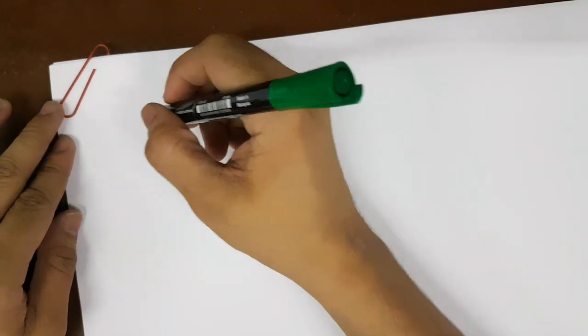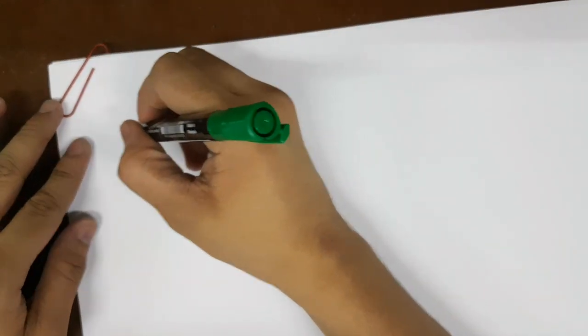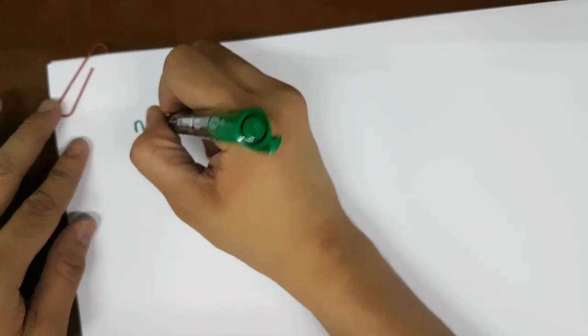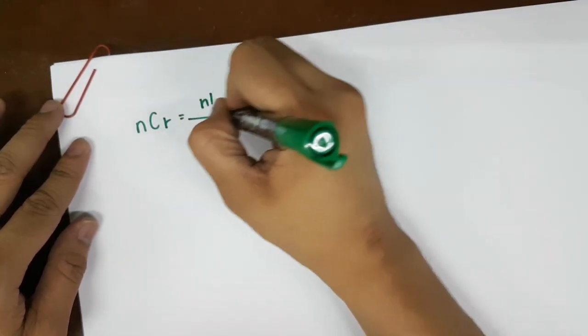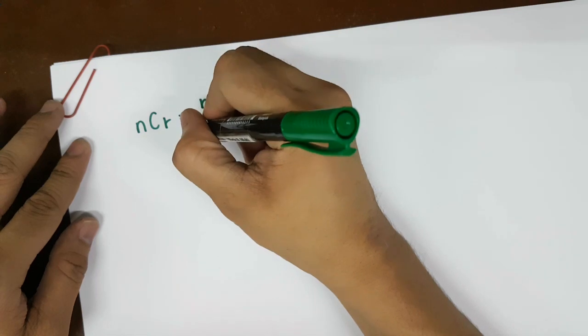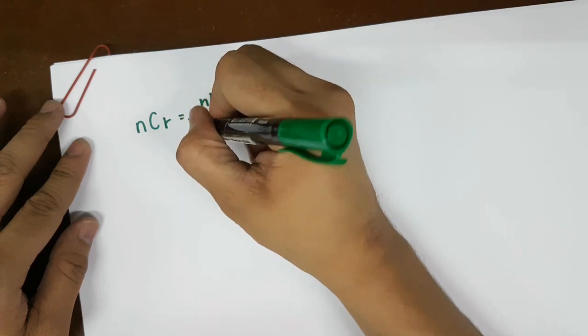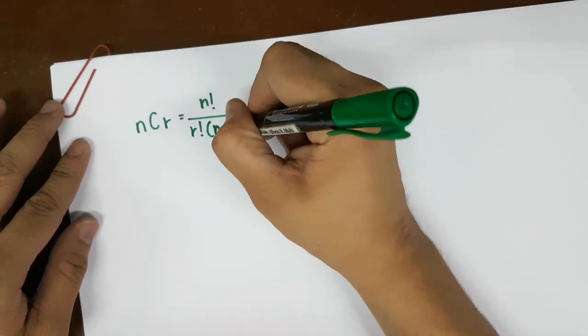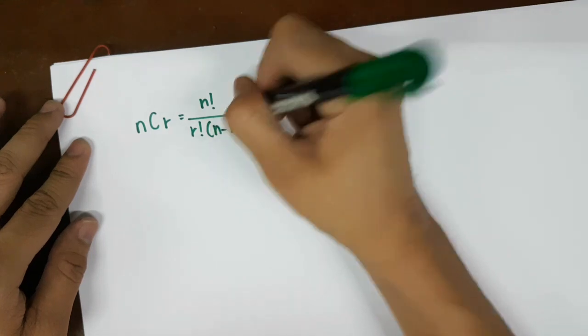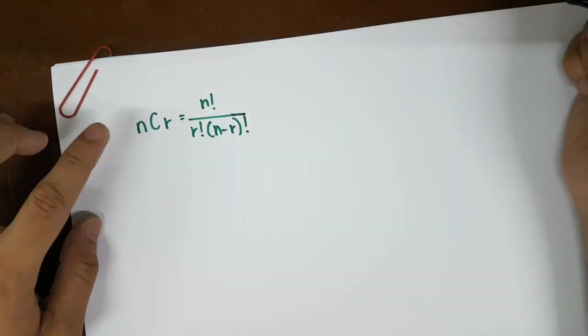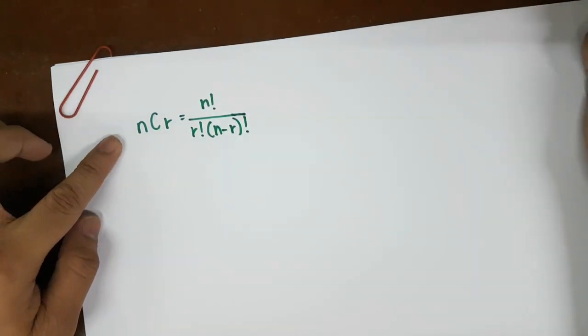Under permutations and combinations, we have two important formulas. The first one is NCR, which is equal to N factorial over R factorial times N minus R factorial. This is the formula for combinations.